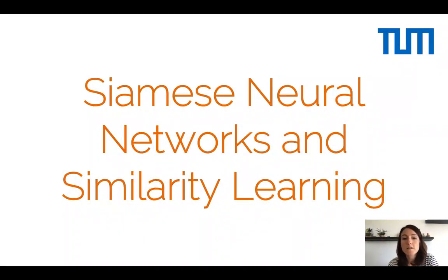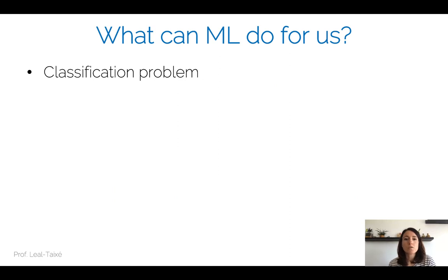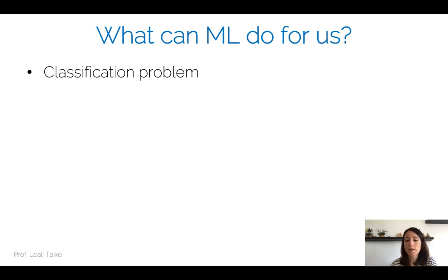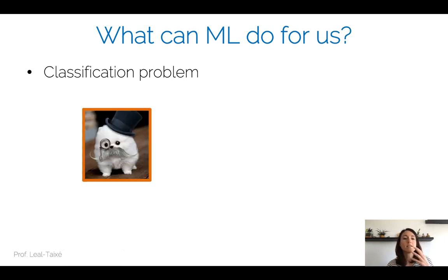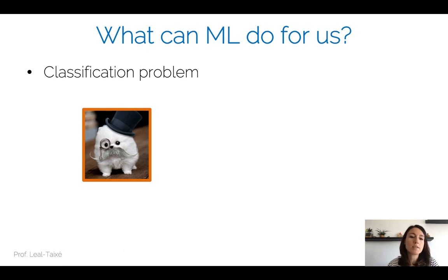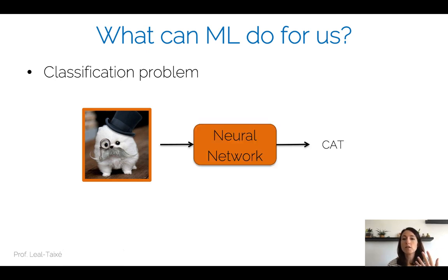Welcome to the lecture on Siamese neural networks and similarity learning. So far we have seen at I2DL but also at the beginning of ADL4CV several problems that we have tackled with machine learning and in particular with deep neural networks. Machine learning is actually really good for classification problems, and we have seen the standard problem in computer vision which is image classification. You have as an input an image, for example an image showing a cat, you pass it through a neural network and this neural network gives you the label 'cat', classifying the whole image.